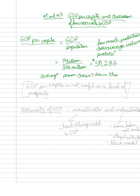The average person does not get $58,282, it's something much less than that. So GDP per capita is not useful as a level of prosperity, I guess you would say, because it is just an average.